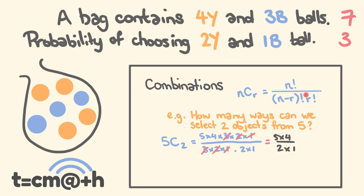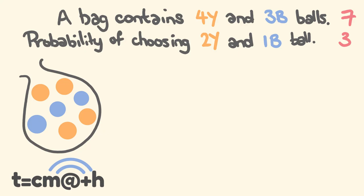Here's a shortcut: when selecting two objects out of five, we go 5 factorial but only come out r times — so just 5×4 — and then divide by 2 factorial on the bottom. We're going to be using this shortcut for our probability question coming up. So now you've got the basics of combinations, let's go through and solve this.